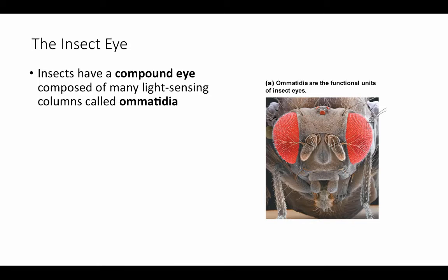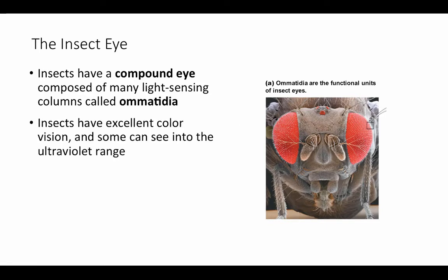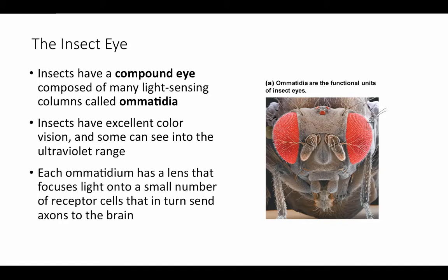Let's take a look at the eyes found in insects and many other arthropods. Insects have a compound eye composed of many light-sensing columns called ommetidia — each of these little individual functional units in the compound eye. In many cases, insects have excellent color vision and some can even see into the ultraviolet range, which we'll discuss when we talk about color perception. Each ommetidium has an individual lens that is going to focus light onto a very small number of receptor cells, usually about four per ommetidium.